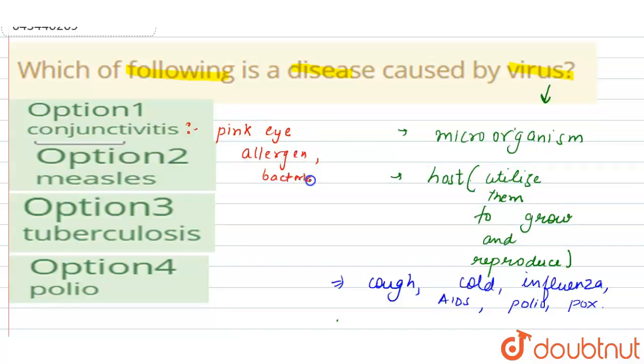Next option we have is measles. It may be caused by bacteria or may be caused by virus called measles virus. It affects nose and throat and it is a communicable disease, means it spreads from one organism to another organism through cough and sneeze.